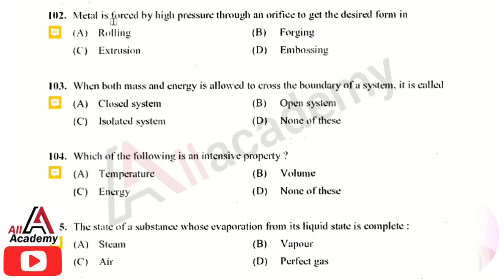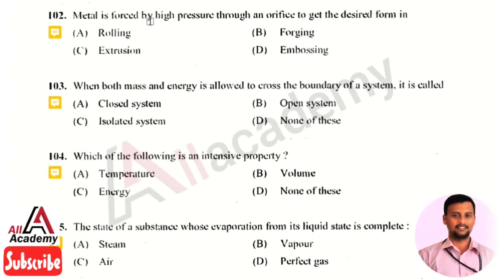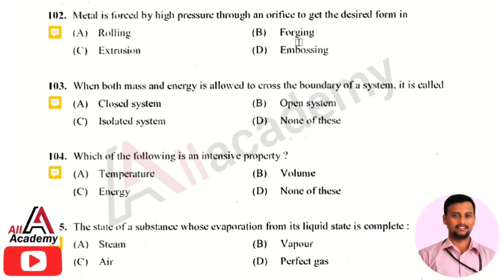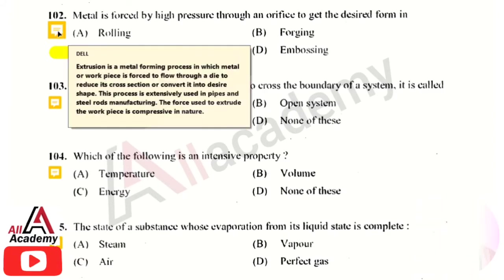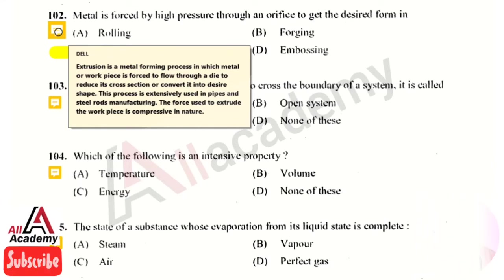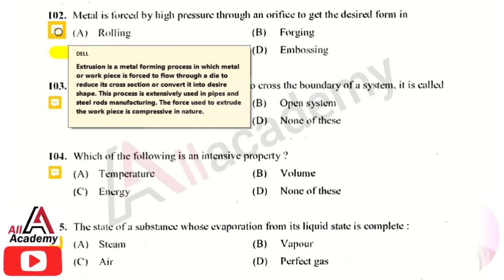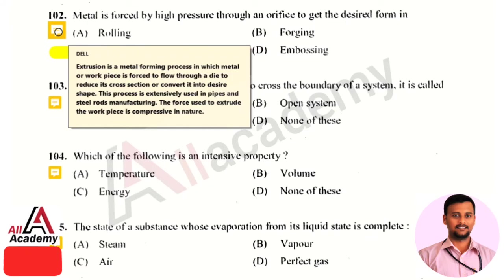The next question: the metal is forced by high pressure through an orifice to get the desired form in a dash — the right answer is option 3, that is extrusion. Extrusion is a metal forming process in which the metal or workpiece is forced to flow through a die or orifice to reduce its cross-section and convert it into a desired shape.